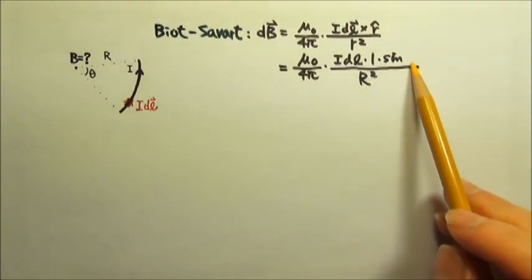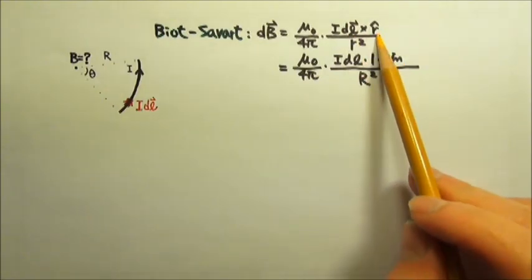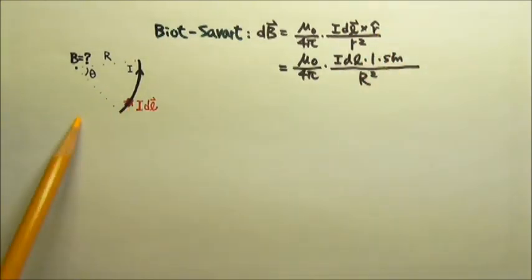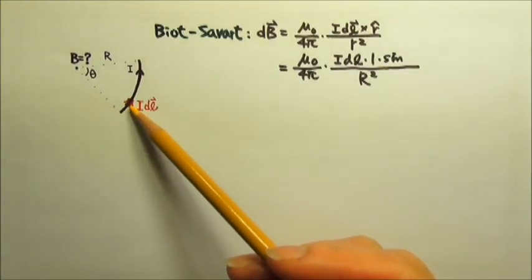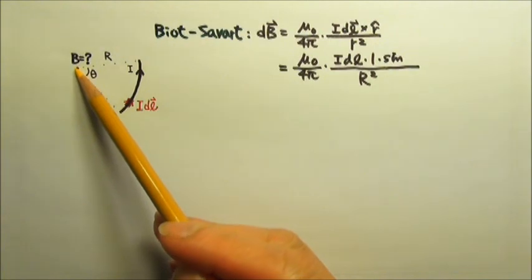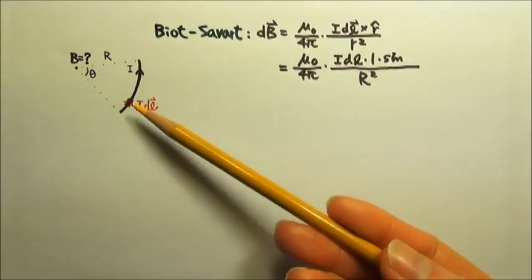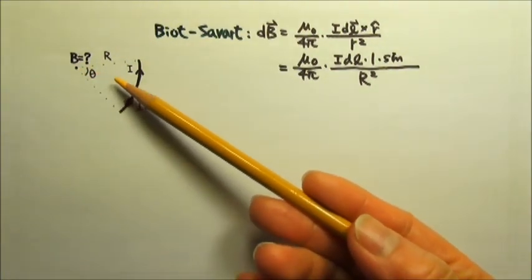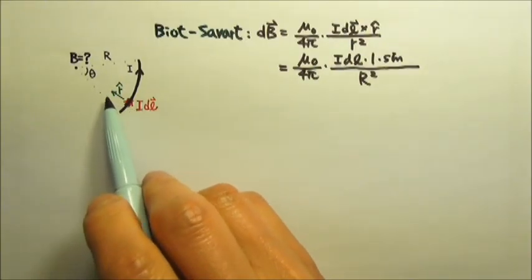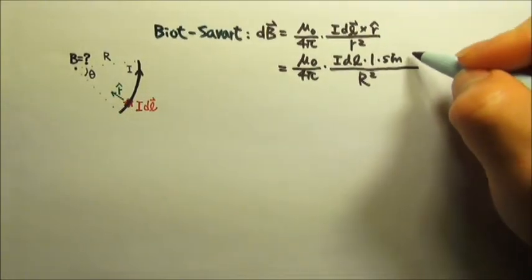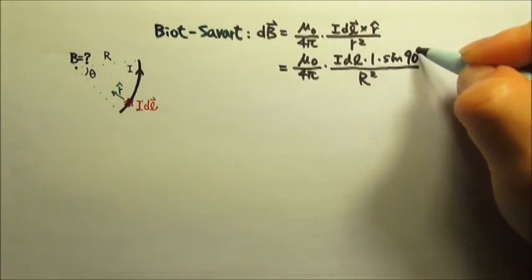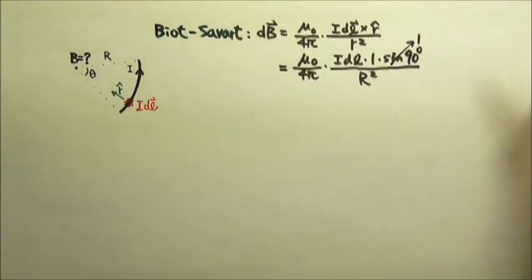Now we need the angle between dL and R. dL goes that way, the direction of the current. R goes from the point source to the location we are interested in, so R goes that way. So what is the angle between those two? It is 90 degrees, and sine 90 degrees is 1.